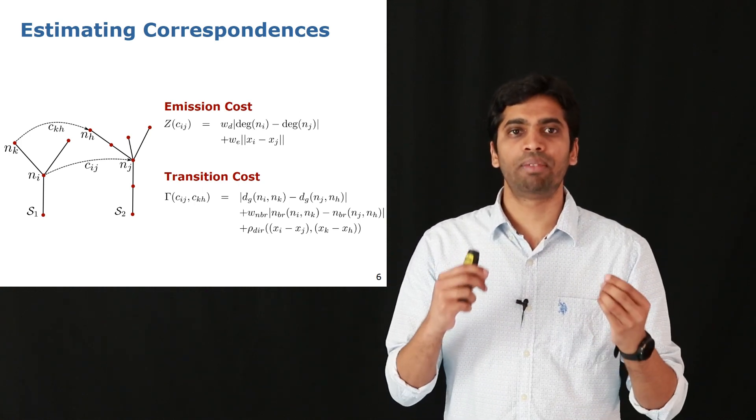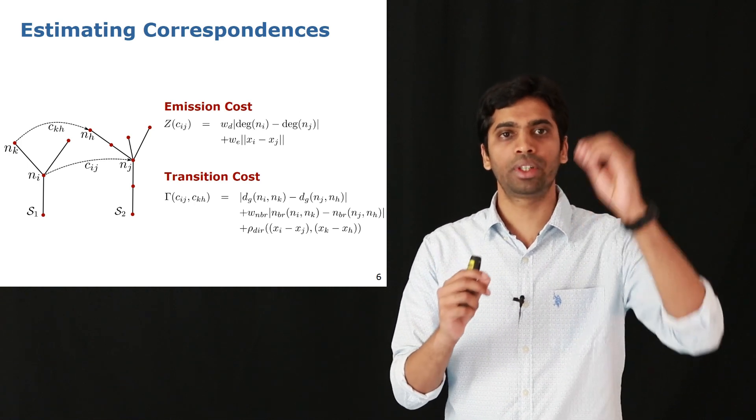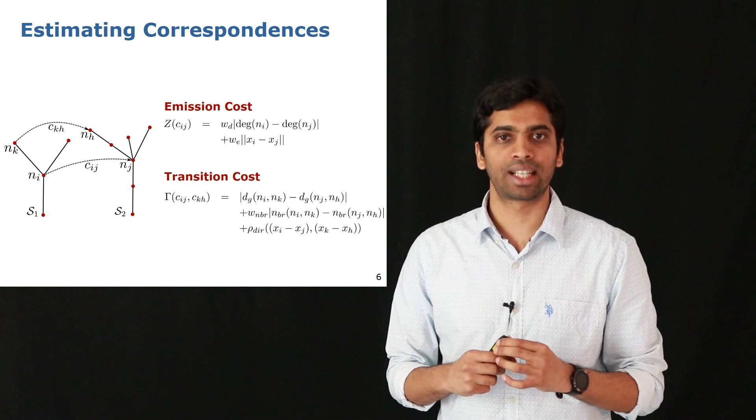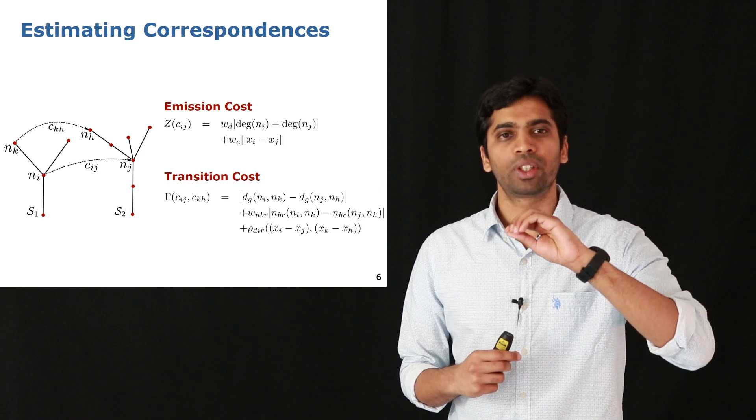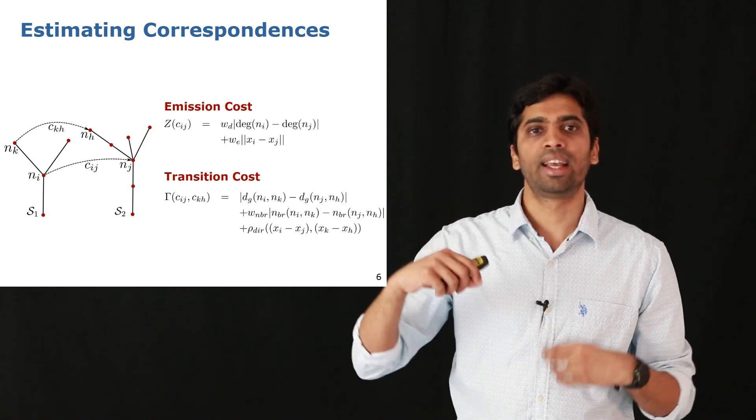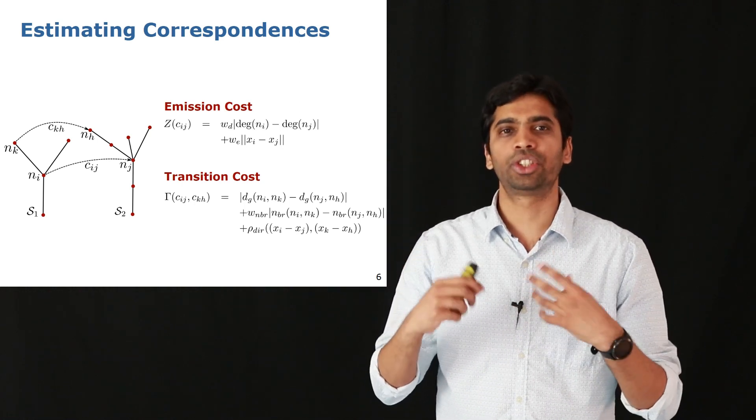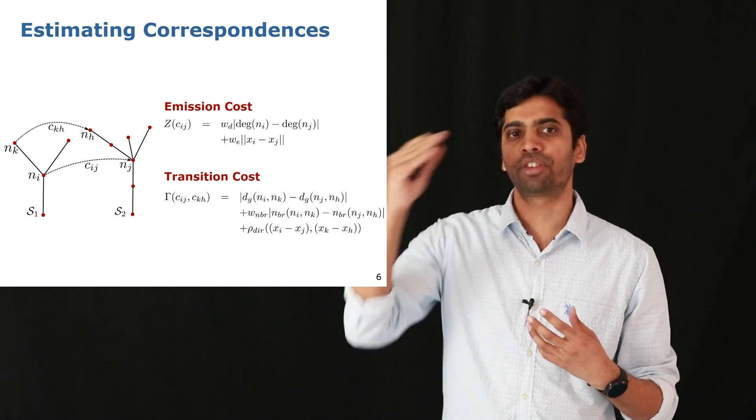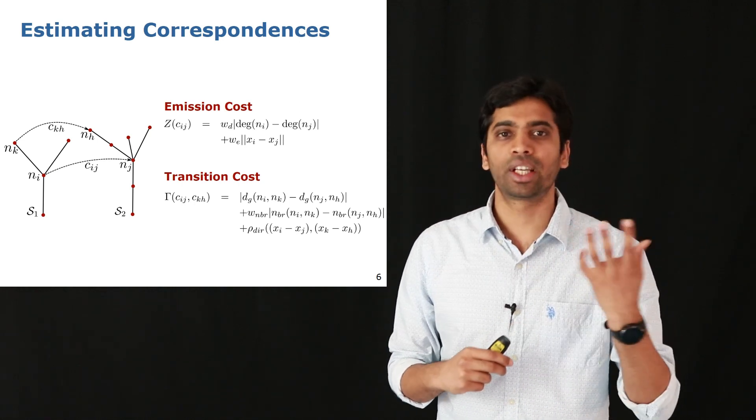This gives us a measure of how close or how similar these nodes are distributed along the two corresponding skeletons. The second cost depends on the number of branches as one goes from node Ni to Nk and similarly from Nj to Nh on S2. The idea is to check if the topology on the way from these two nodes connected by correspondences match.